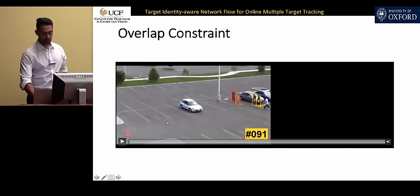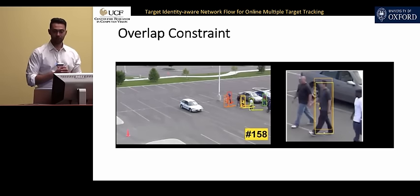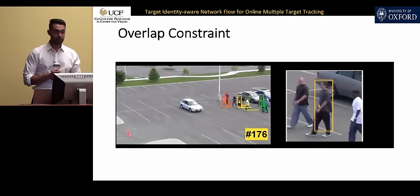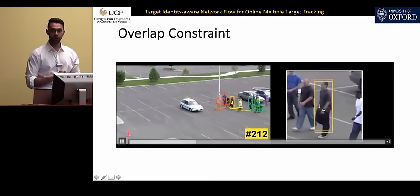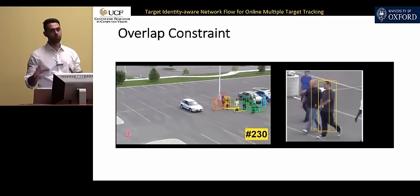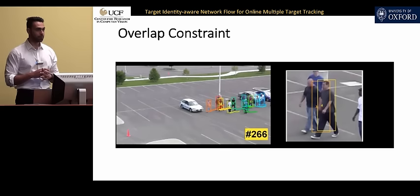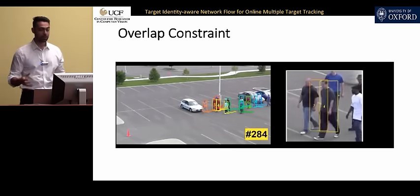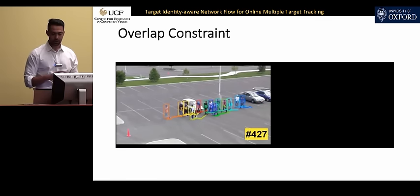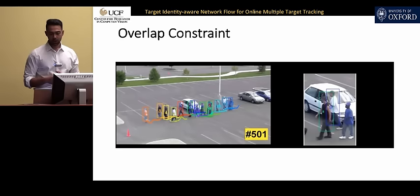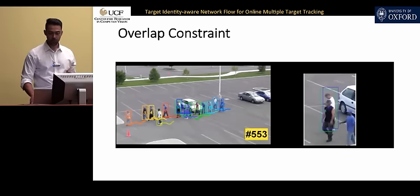The last thing to discuss is the overlap constraint. Consider sequences where people with similar appearance are walking next to each other. While Lagrangian relaxation handles shared detections, what if bounding boxes are highly overlapping? With a pre-trained object detector, non-maximum suppression handles this during detection, but here we don't have such a step to get more meaningful tracks. These are not exactly failure cases, but the tracks are not very plausible, so we want to fix them using an overlap constraint.